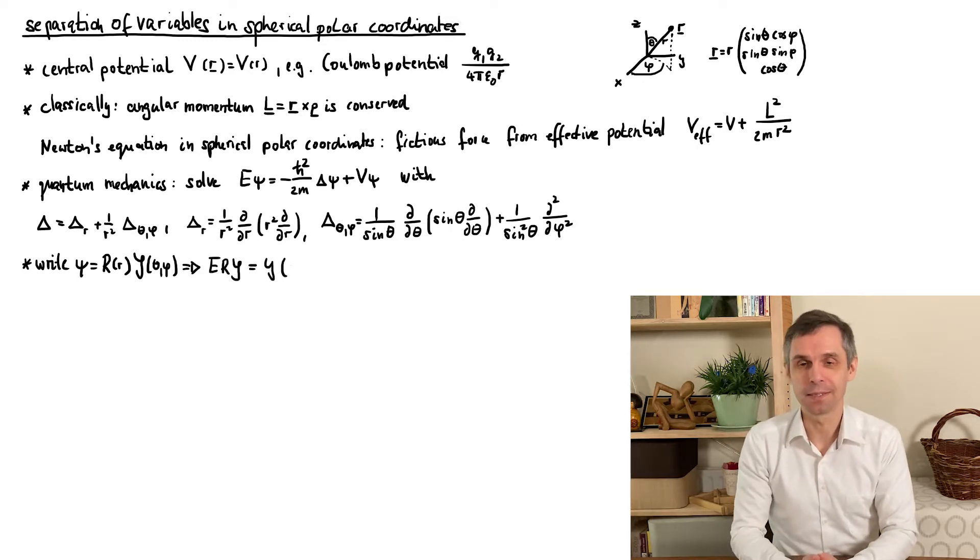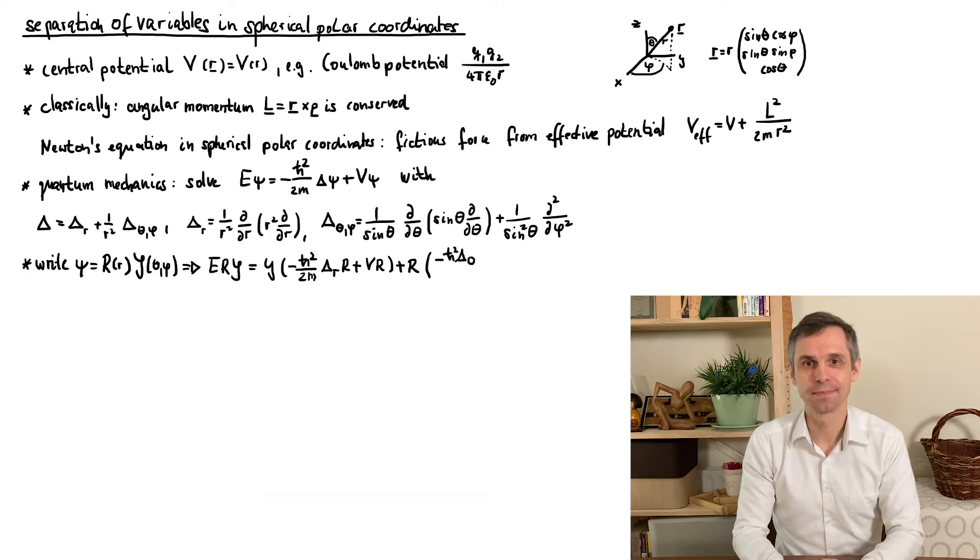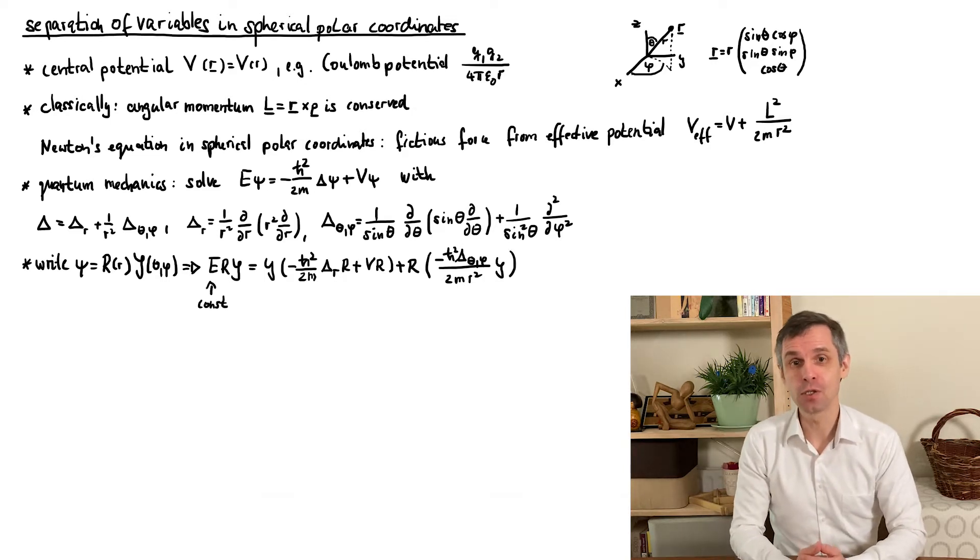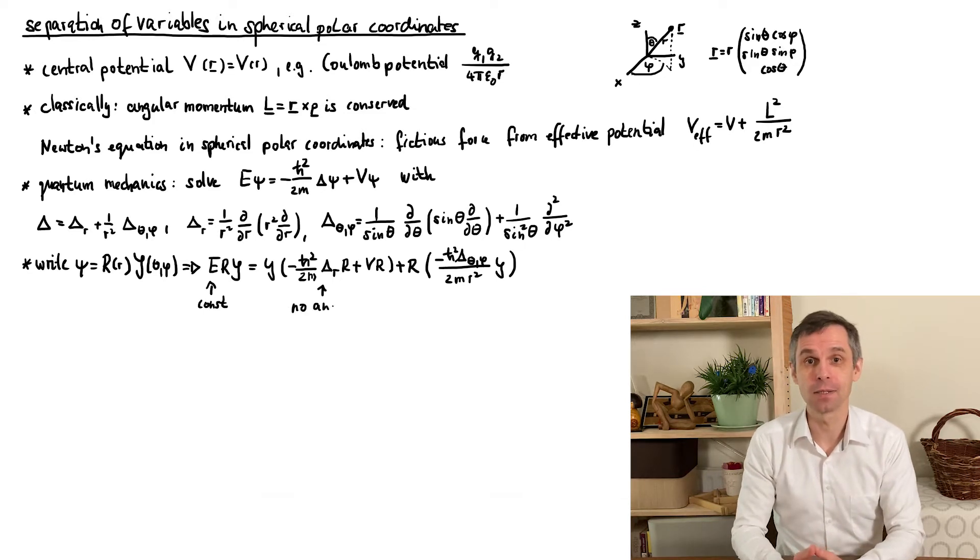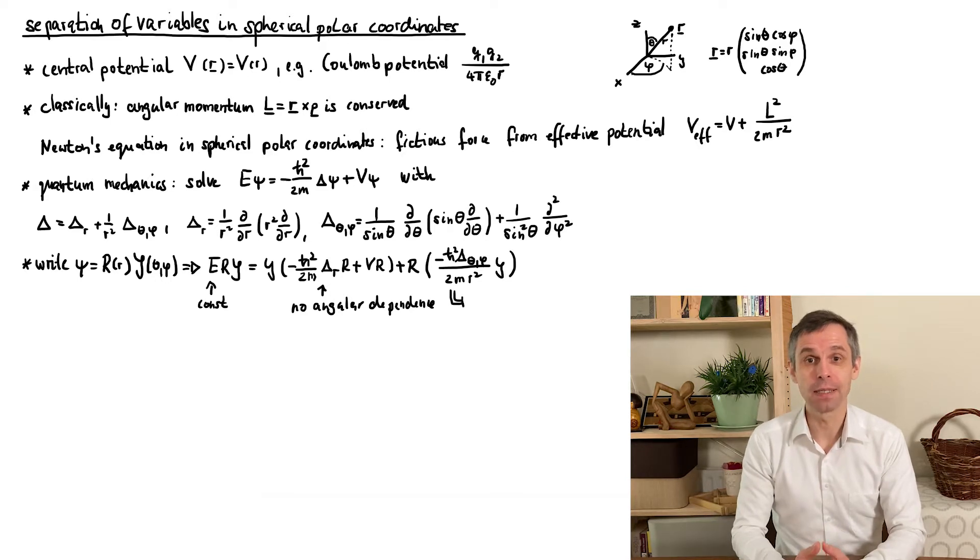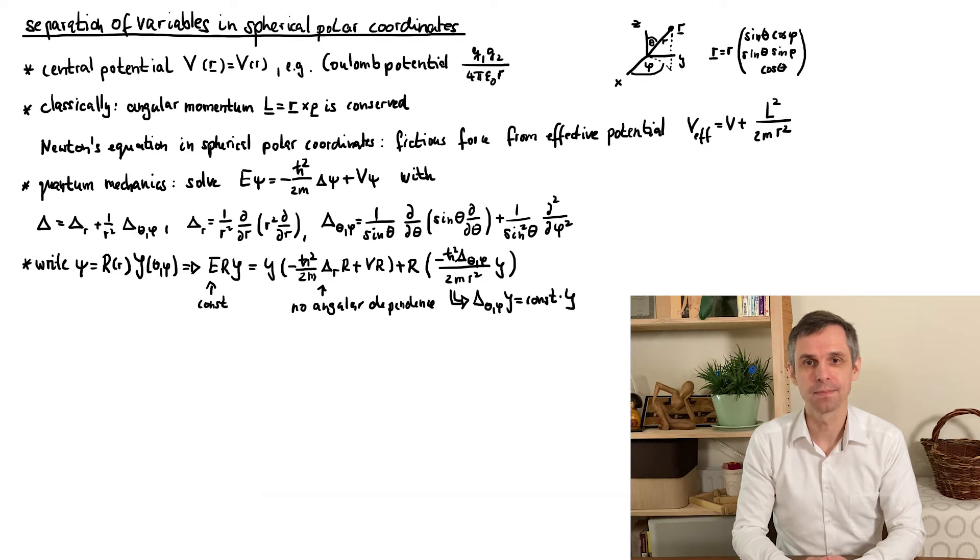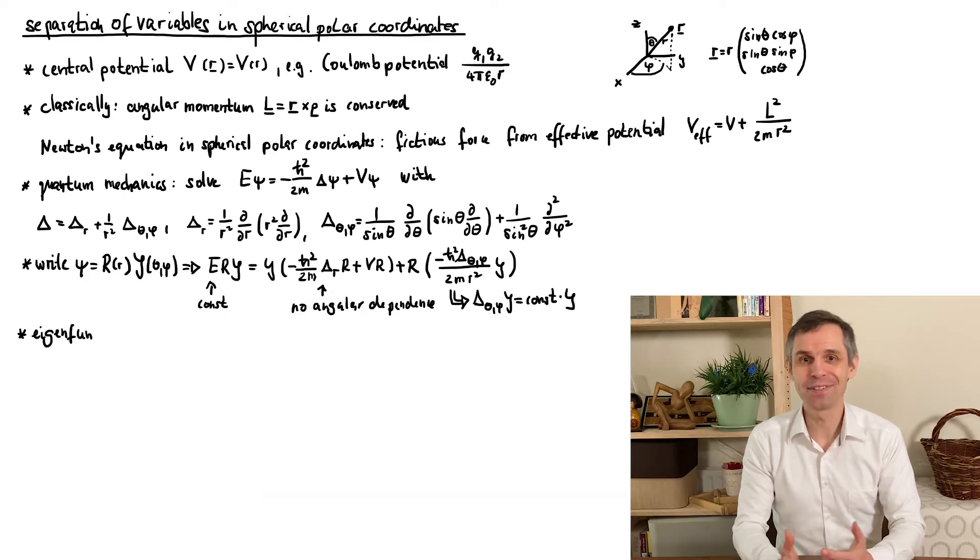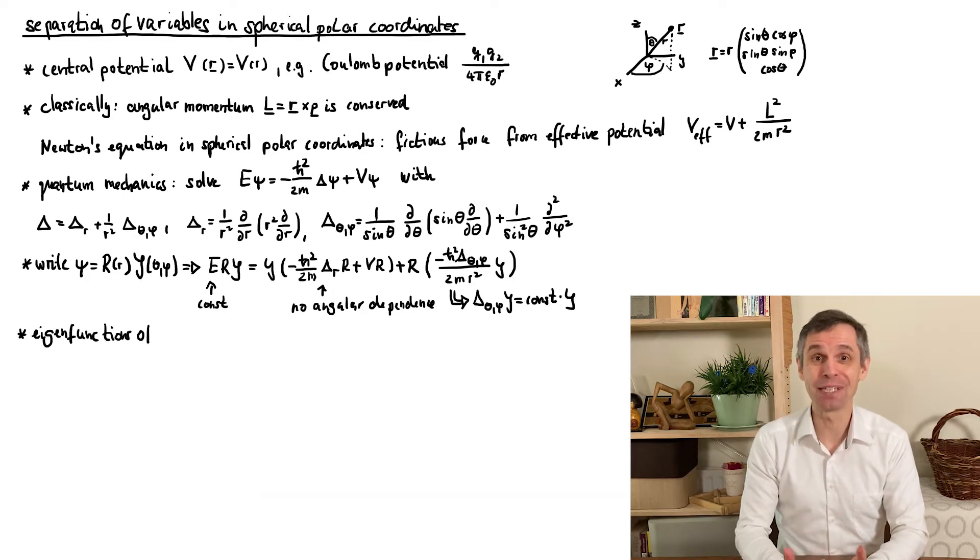We insert this into the Schrödinger equation. Now, by comparing the different parts, we find a condition so that the angular dependence in the last term factors out, which it must because the other terms do not have an explicit angular dependence. And when we look at this condition, then it simply states that Y should be an eigenfunction of the angular part of the Laplace operator.